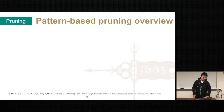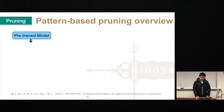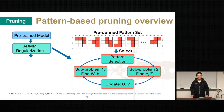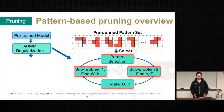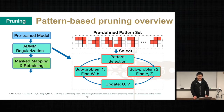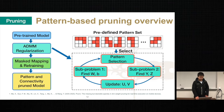We next explain the detailed procedures of our pattern-based pruning. First, we need a pre-trained model. Next, we need to determine the number of patterns in our candidate pattern set. If the candidate pattern set is too large, it is more challenging to generate efficient codes, thereby affecting performance. If it is too small, we do not get enough flexibility, which may lead to accuracy degradation. Finally, we re-train the model with an ADMM-based approach. Our output is a compressed model with varied patterns. Please refer to our paper for more details.